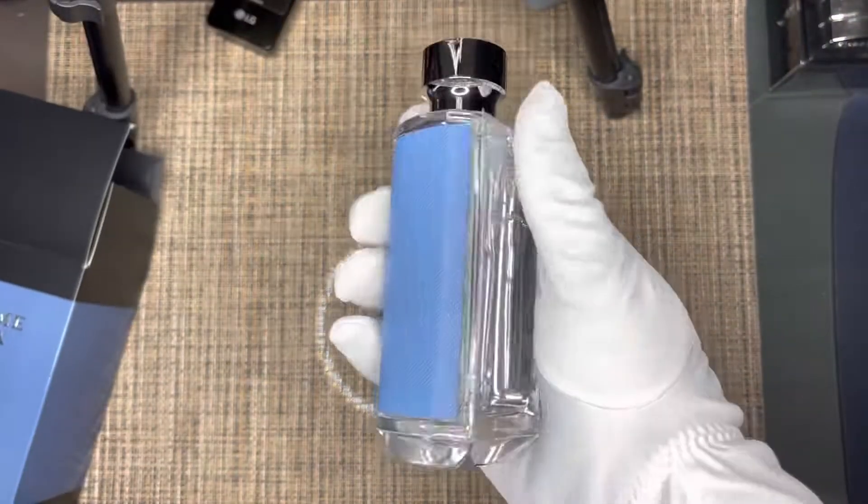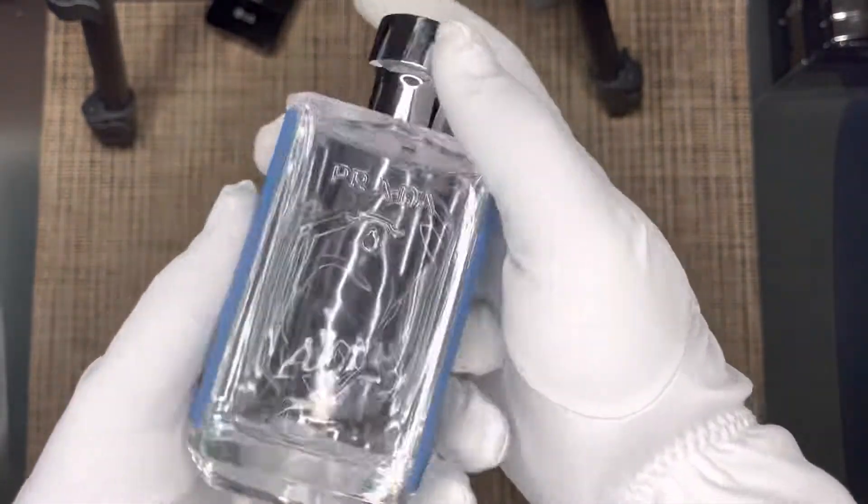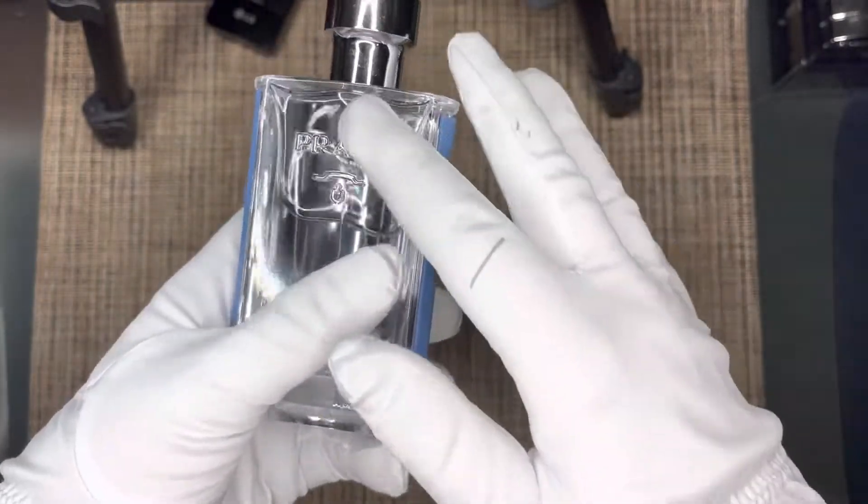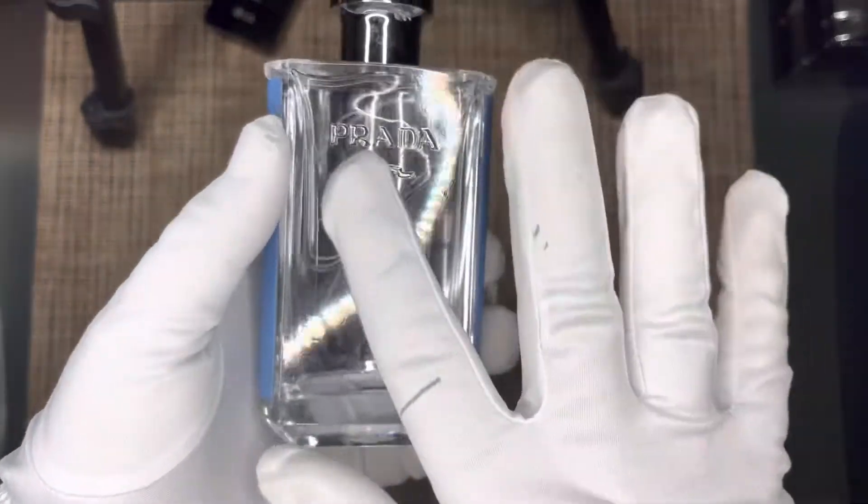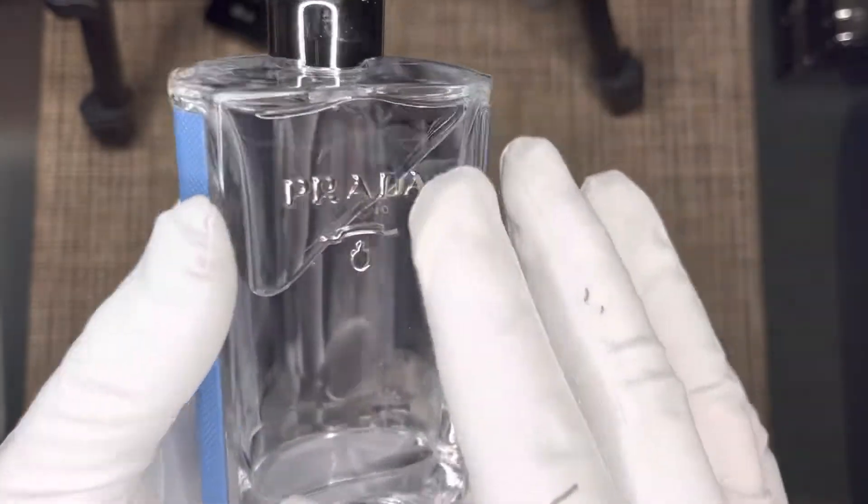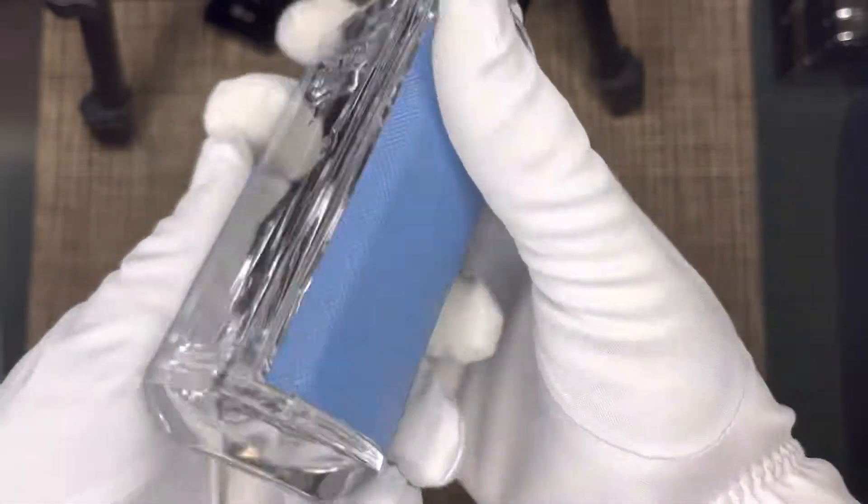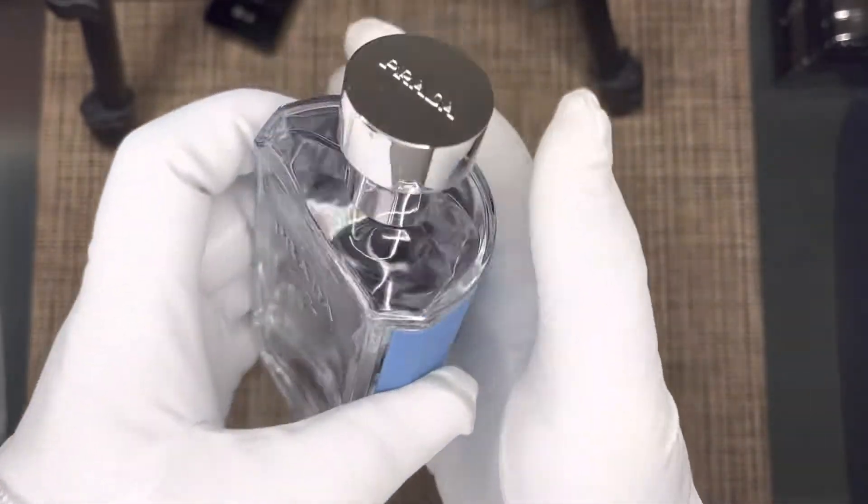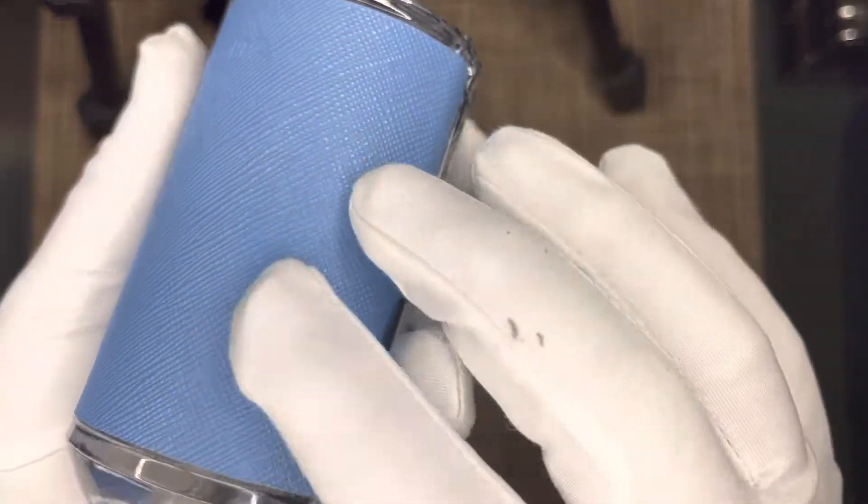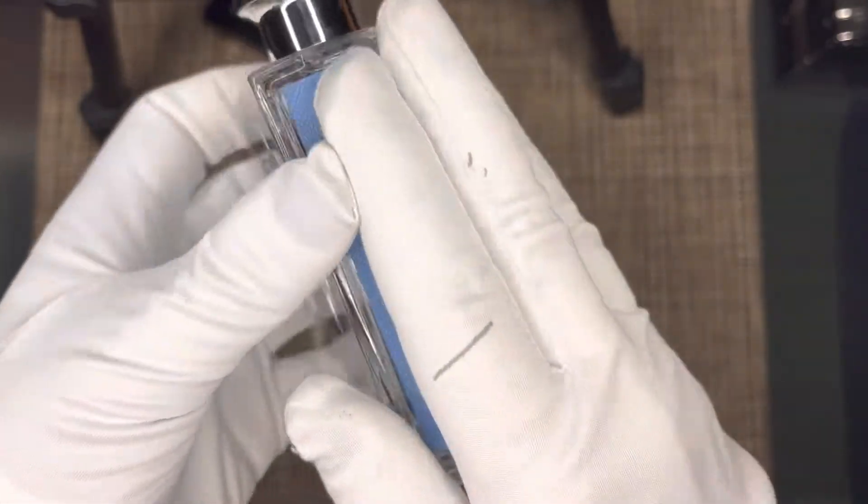Here it is, Prada L'Homme L'Eau. Very nice, attractive bottle. Just from the get-go, you can see very clear fragrance inside this glass bottle. You have the Prada and a seal embossed onto the glass over here. Gives it a very nice premium touch, and the rest of the bottle is also very interesting.